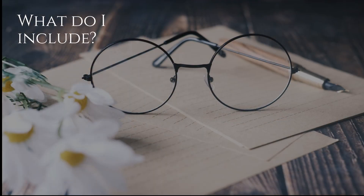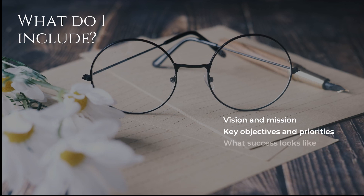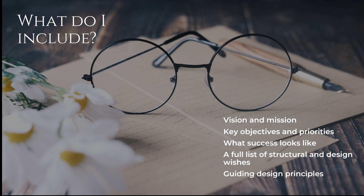So what should I include? We worked with the following sections: vision and mission, key objectives and priorities, what success looks like for us, a full list of structural and design wishes, our guiding design principles, and potential challenges and barriers. Now let's explain these in a little more detail.